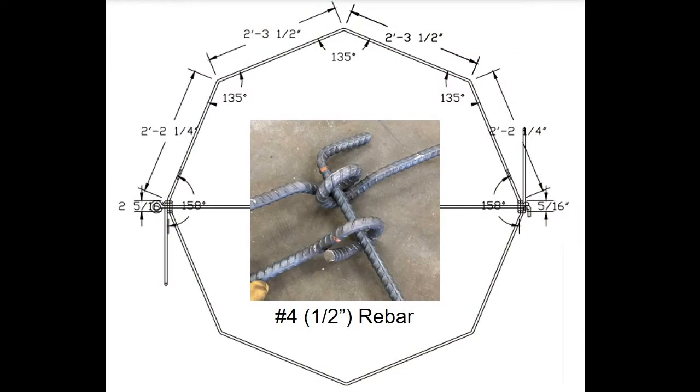This diagram shows the measurements of the sides and the angles that we use on a full-size trap, as well as the inserted image showing the nature of the hinges. You can see the tight loops bent into that number four rebar. That's half inch rebar. The inside diameter of those loops is about an inch and a half or so. The outside diameter is probably two and a half inches.